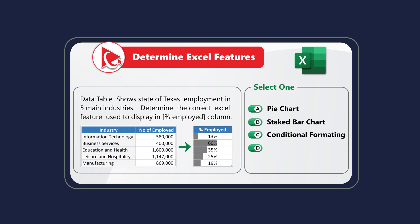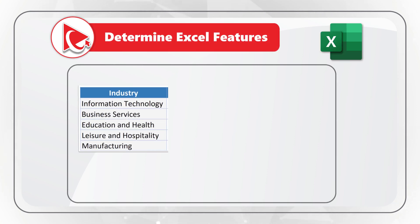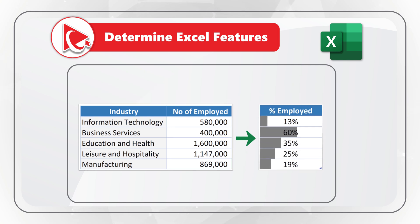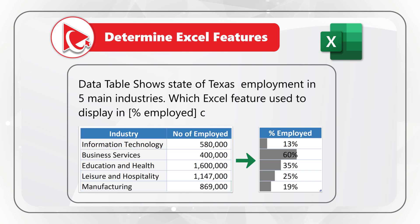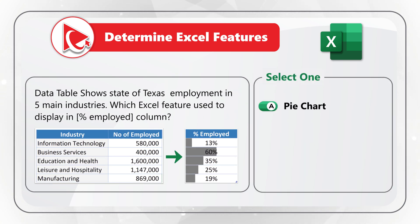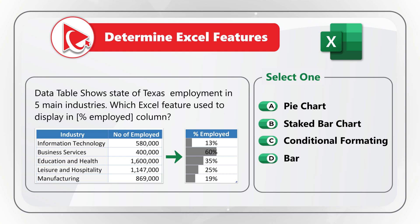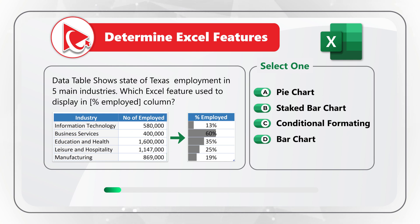Here's an amazing question to test your knowledge of Microsoft Excel features. You're presented with a data set showing industry and number of people employed — Texas employment in five key industries. You need to determine the correct Excel feature used to display the percentage employed column. Choices: A, pie chart; B, stacked bar chart; C, advanced conditional formatting; D, bar chart.